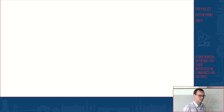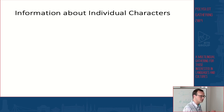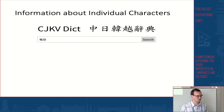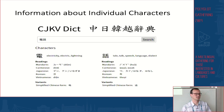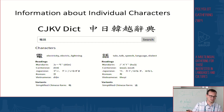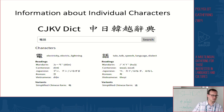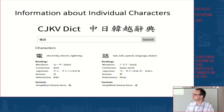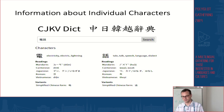Another useful feature is that CJKVDICT can give information about individual characters within a word. For example, using the word 'telephone,' I can discover that the first character means 'electricity' and the second character means 'talk,' with pronunciations in all languages of the Sinosphere, and simplified forms in Chinese or Japanese where they exist.